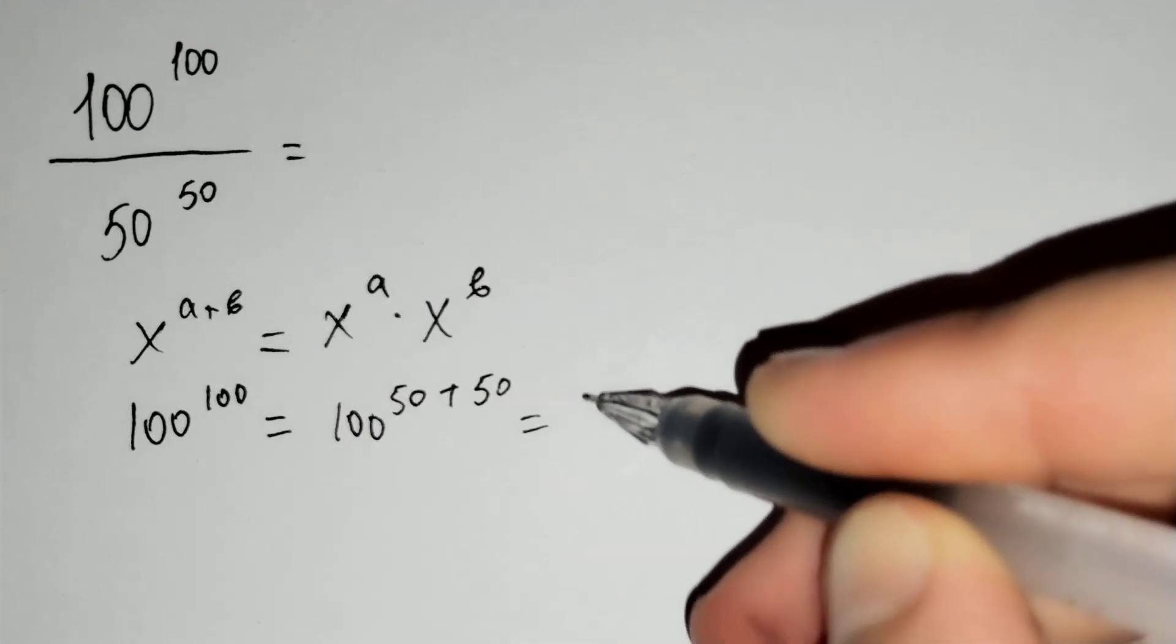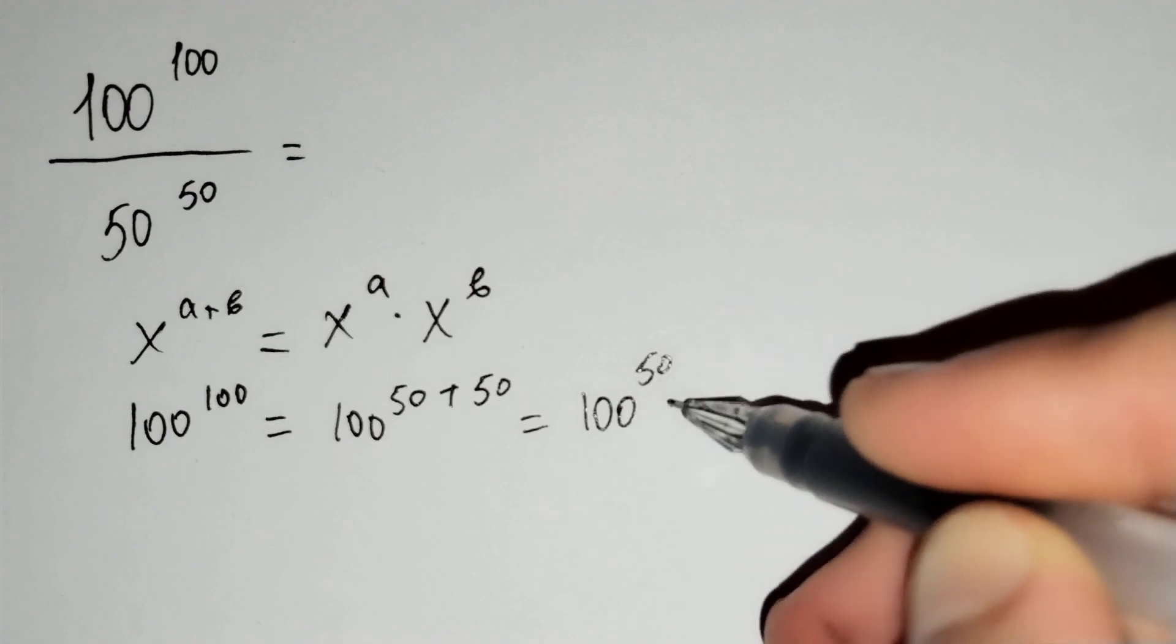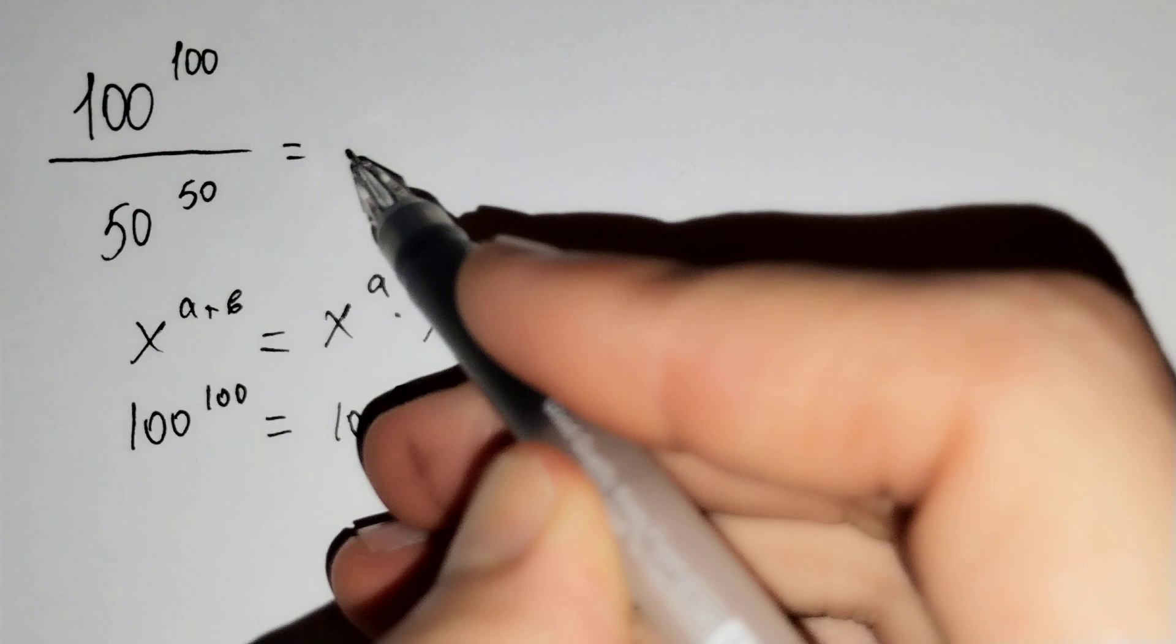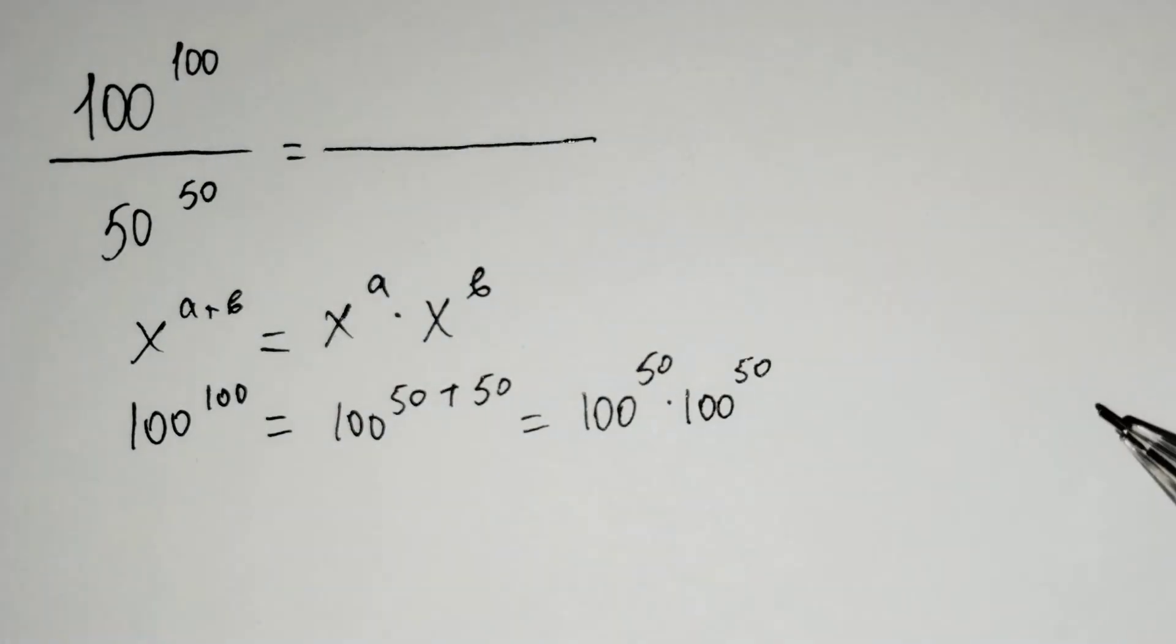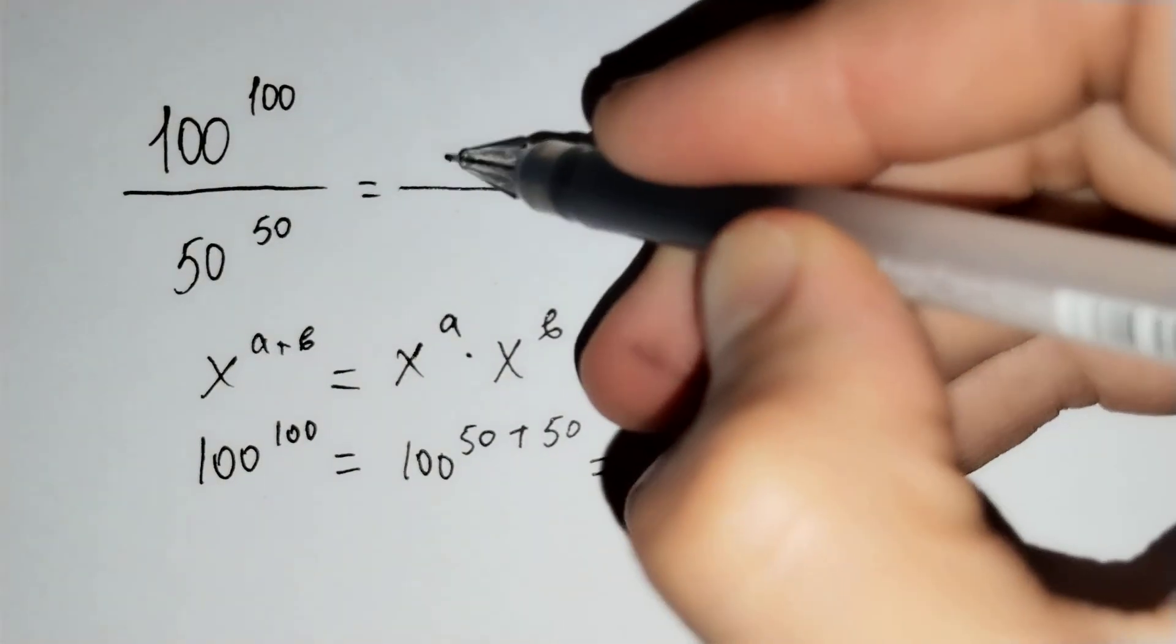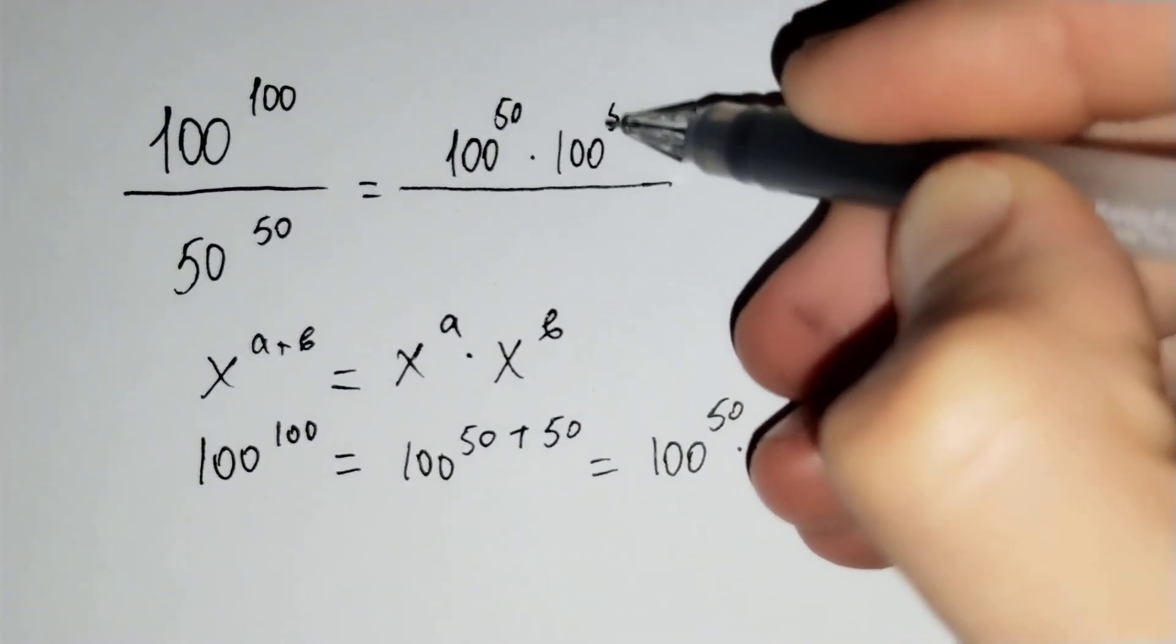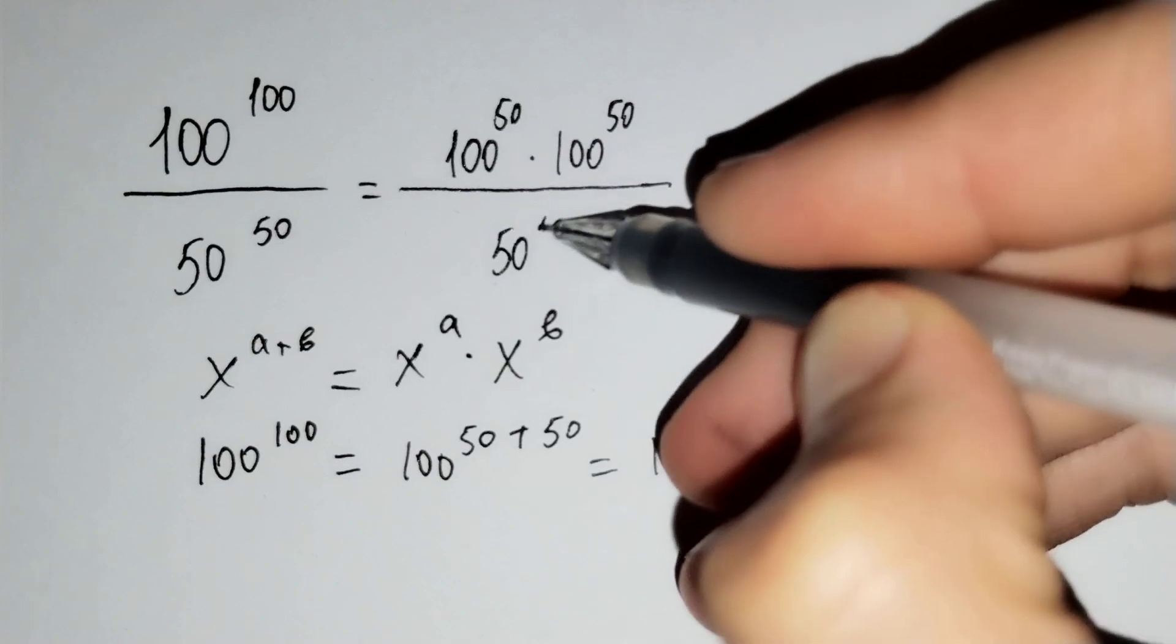And it does 100 power 50 times 100 power 50. Let's put it above. 100 power 50 times 100 power 50 over 50 power 50.